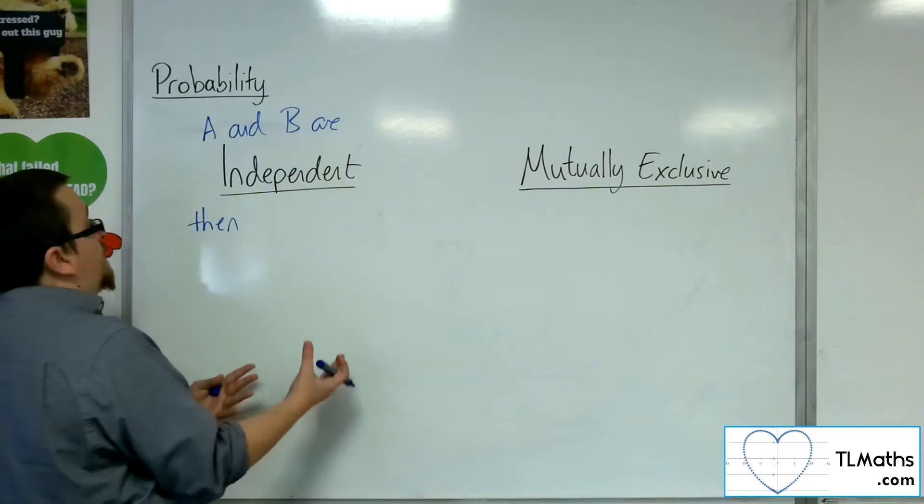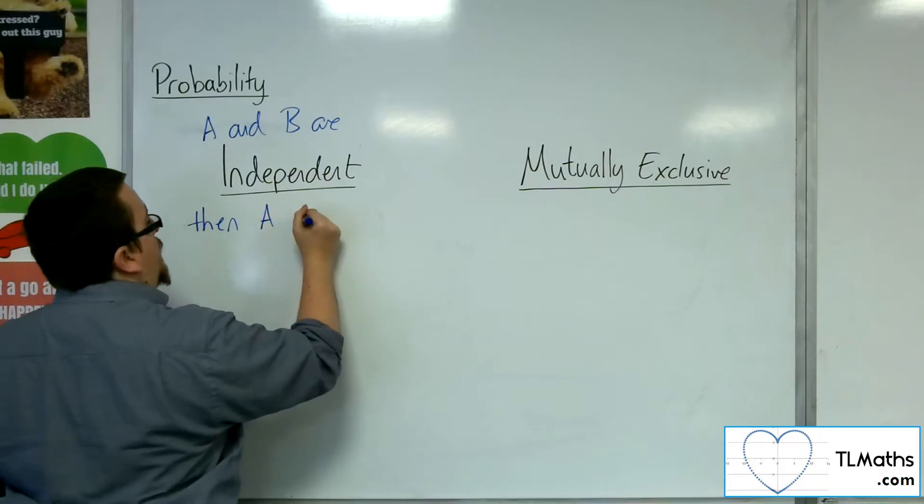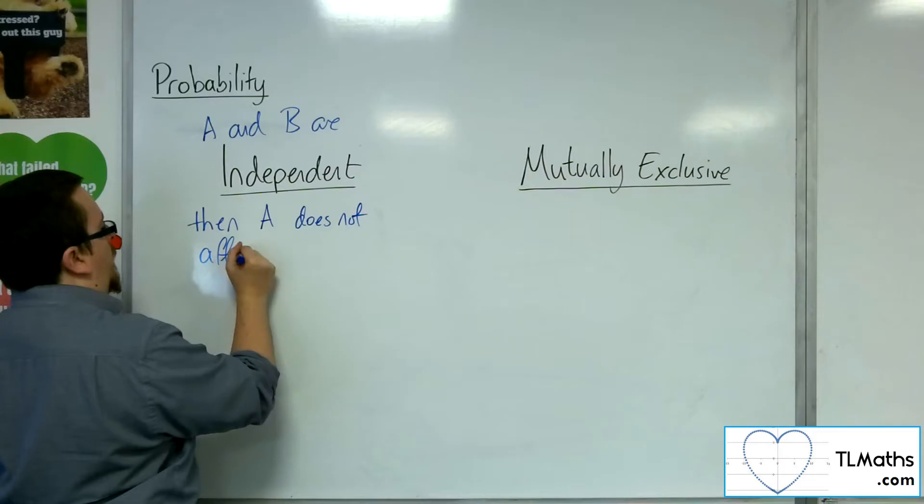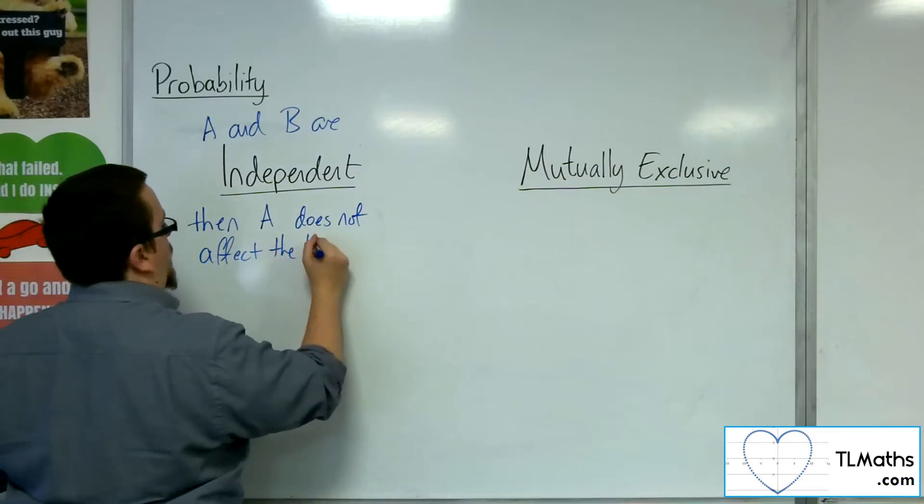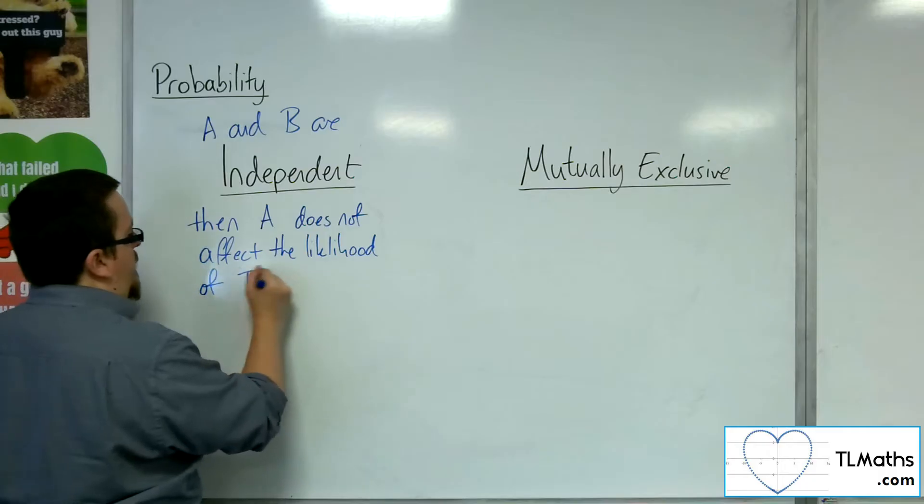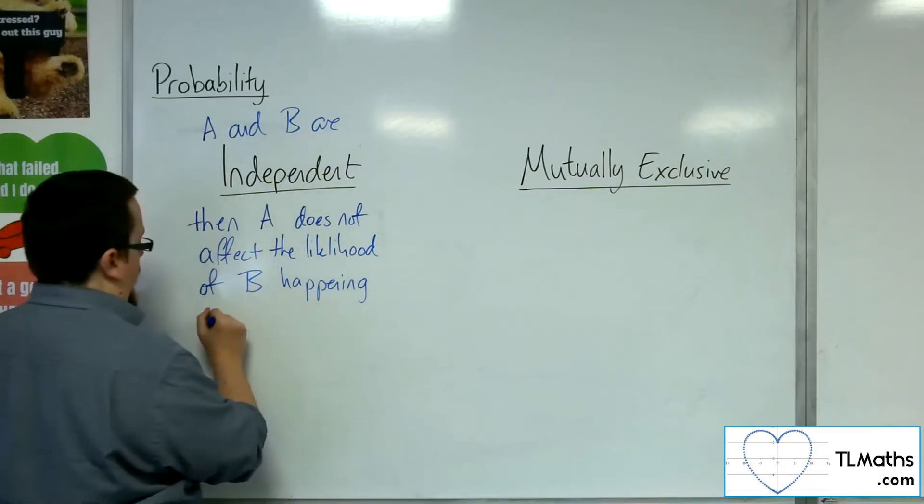So that would mean that A does not affect the likelihood of B happening and vice versa.